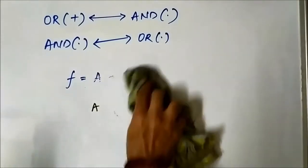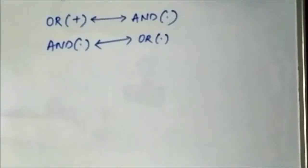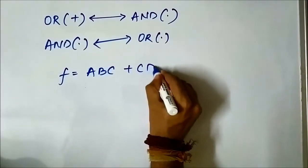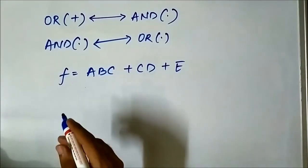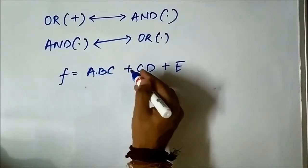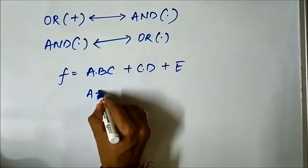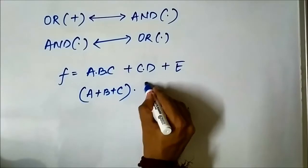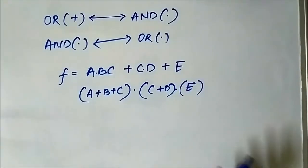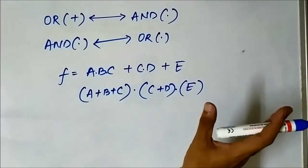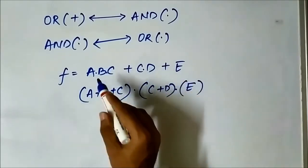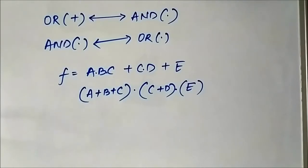Similarly, if there is another expression, let us say f is equal to a·b·c + c·d + e. We simply change AND to OR and OR to AND — dot to plus, plus to dot. So the dual becomes a + b + c · (c + d) · e. We are not changing the value of the Boolean variables; we are simply changing AND to OR and OR to AND. So this is the duality theorem.